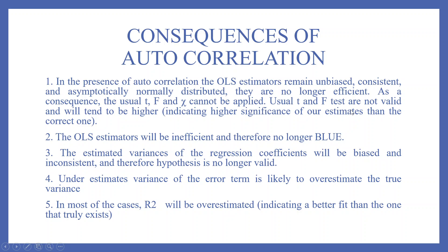The usual T and F tests are not valid and will tend to be higher, indicating higher significance of our estimates than the correct one. The OLS estimators will be inefficient and therefore no longer BLUE. The estimated variances of the regression coefficients will be biased and inconsistent, and therefore hypothesis testing is no longer valid. Underestimated variances of the error term are likely to overestimate the true variance. In most cases, R-square will be overestimated, indicating a better fit than the one that truly existed.